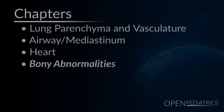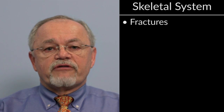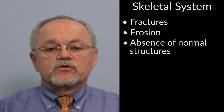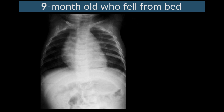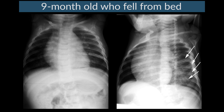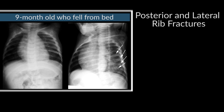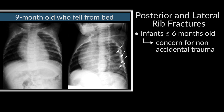Bony abnormalities. A look at the skeletal system is very important when evaluating a chest x-ray, especially for fractures, erosions, and absence of normal bony structures. Here we have a nine-month-old who fell from her bed. Initially the heart, trachea, and mediastinum appear normal. But when we look at the left-sided ribs, we can see multiple posterolateral rib fractures as shown by the arrows. Posterior and lateral rib fractures in infants below six months of age are very concerning for non-accidental trauma and often require oblique images for better evaluation.